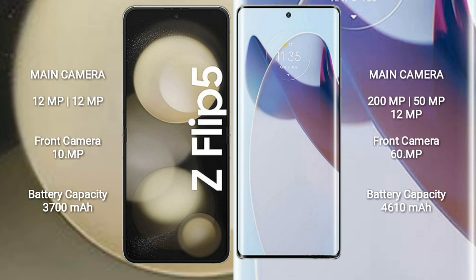Samsung Galaxy Z Flip 5 features a dual rear camera setup: 12MP plus 12MP, with a 10MP front camera. Motorola Moto X30 Pro features a triple rear camera setup: 200MP plus 50MP plus 12MP, with a 60MP front camera.